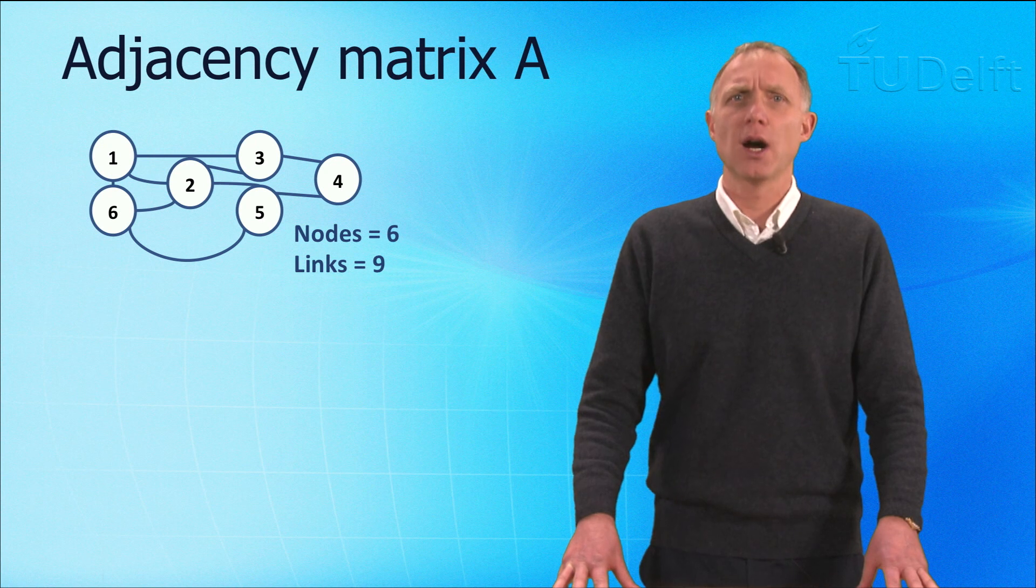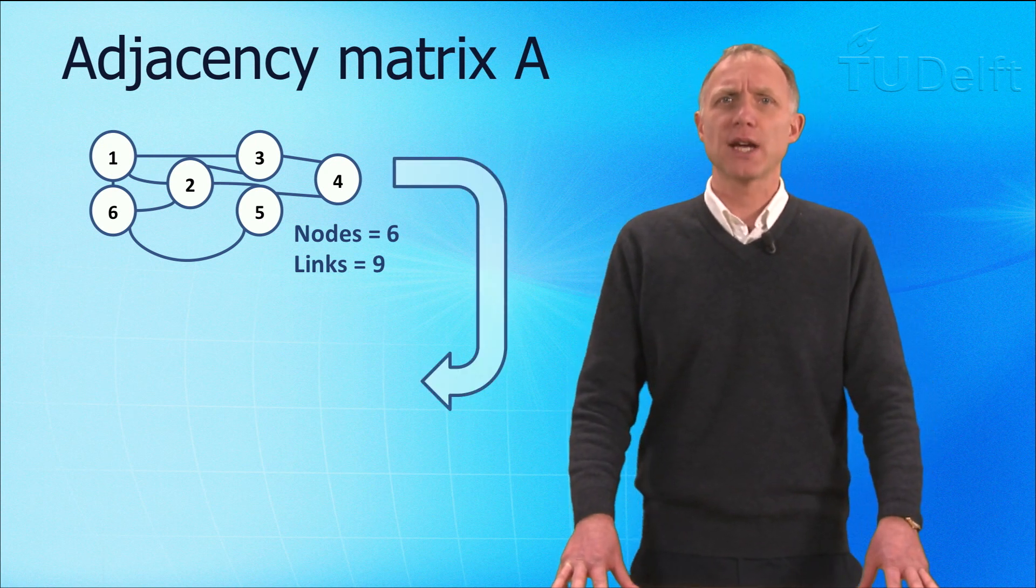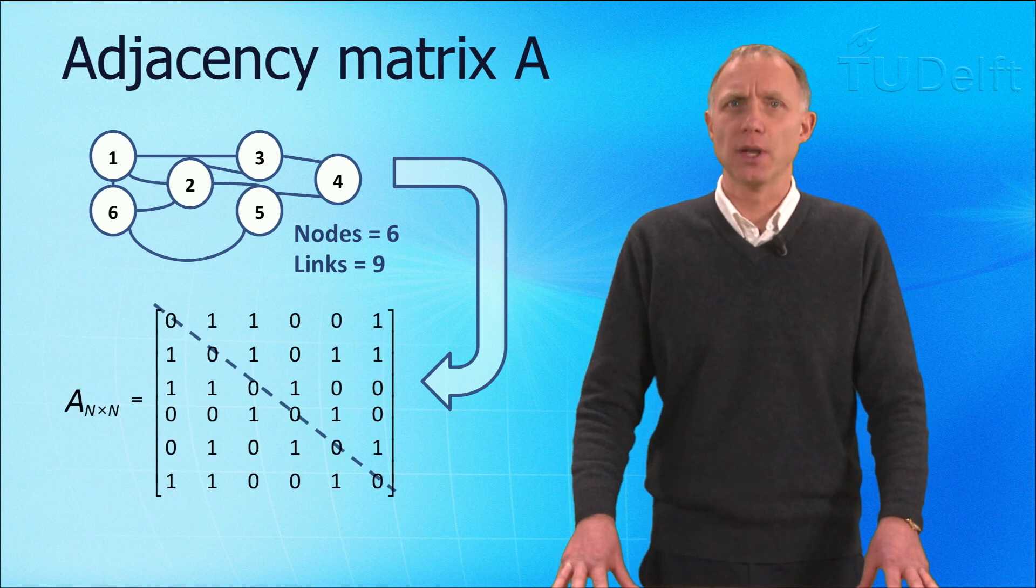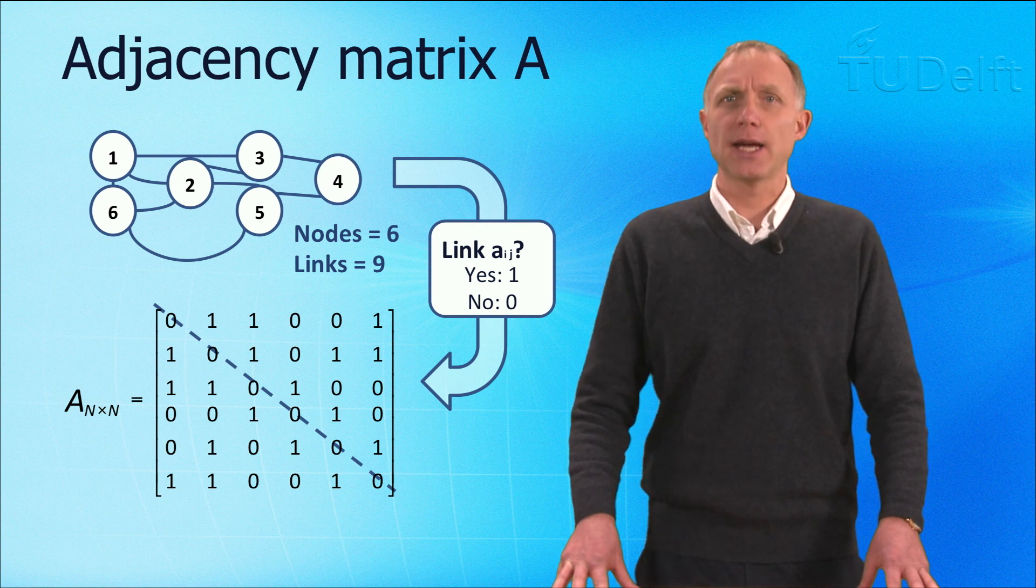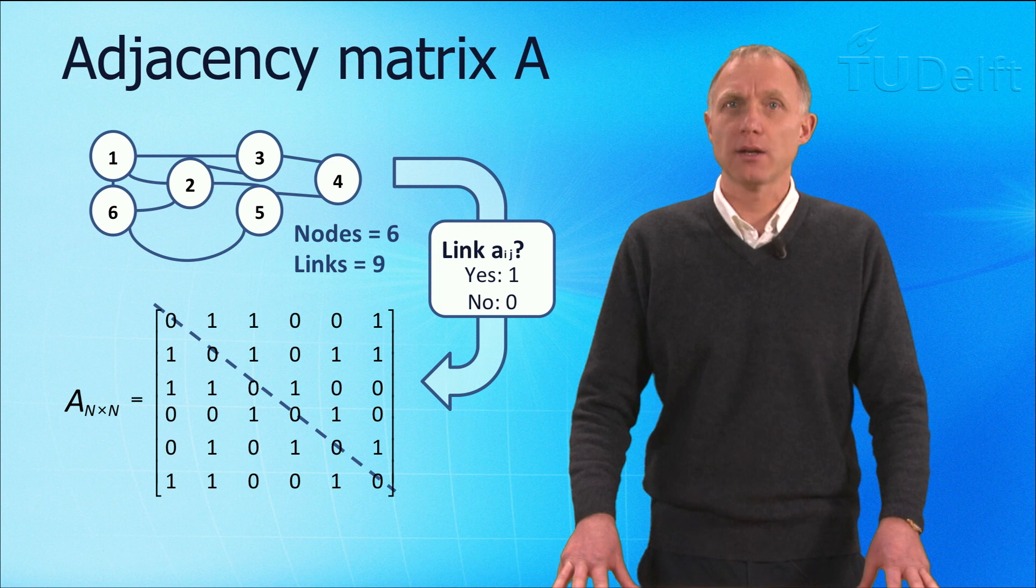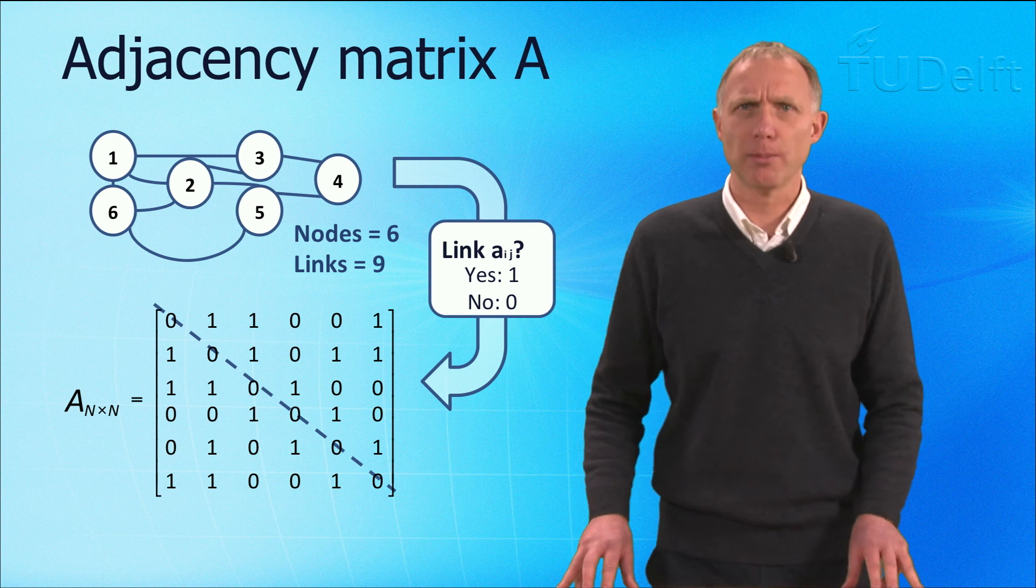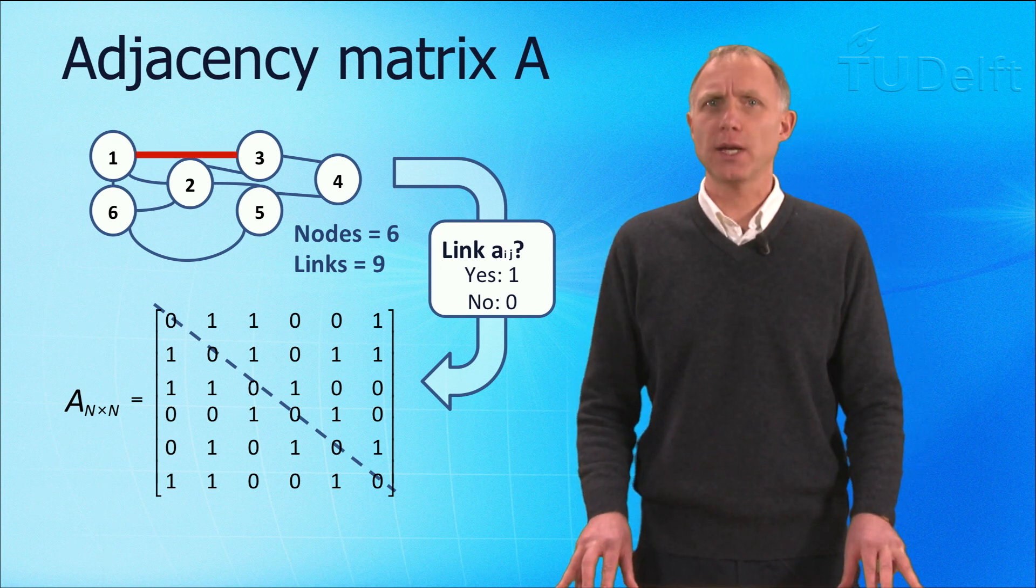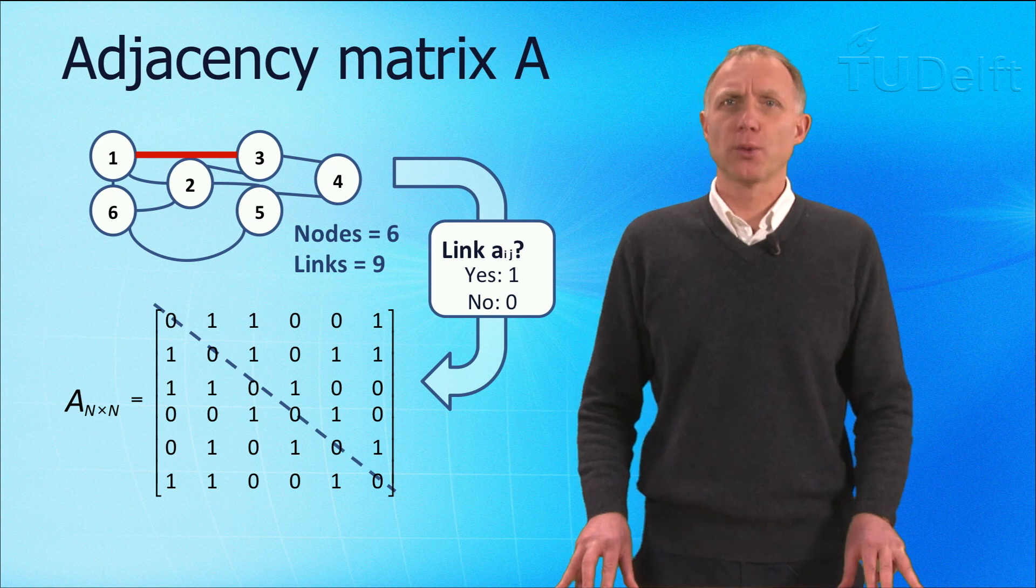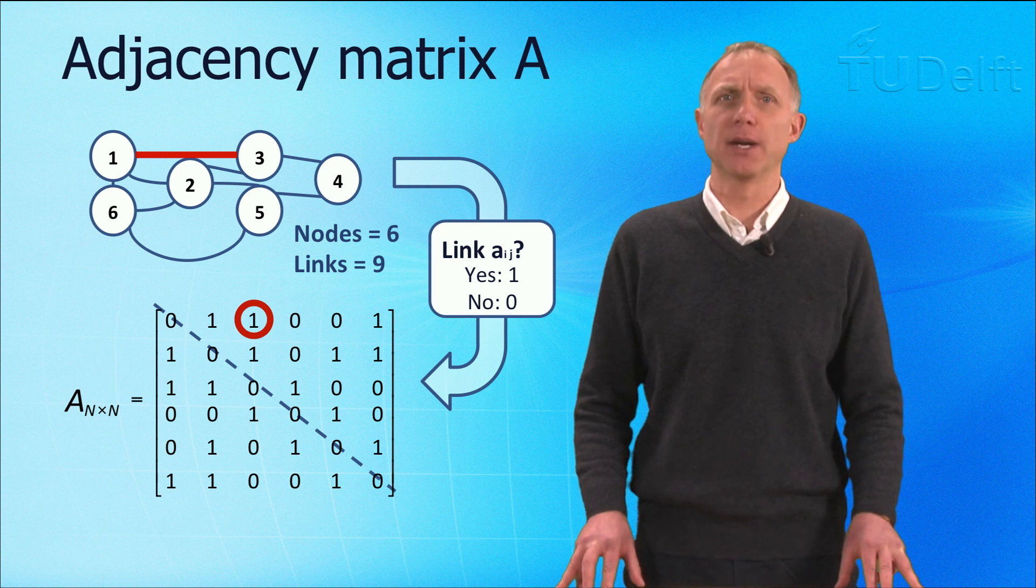The nodes of these networks are represented in both the rows and columns of the adjacency matrix. When there is a link between node i and j, then the matrix element A sub ij is 1. When there is no link, that matrix element A sub ij is 0. For example, the red link between node 1 and 3 corresponds with a 1 in row 1 and column 3 of the adjacency matrix.